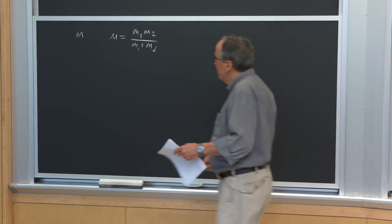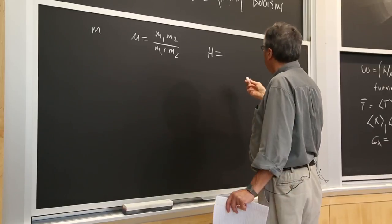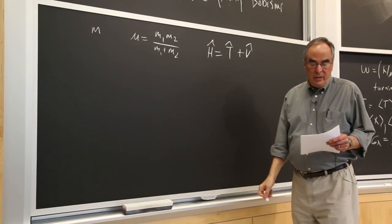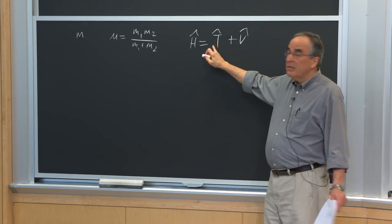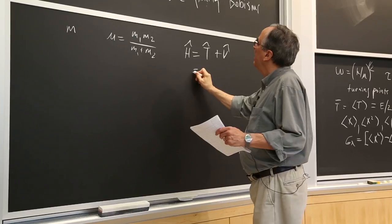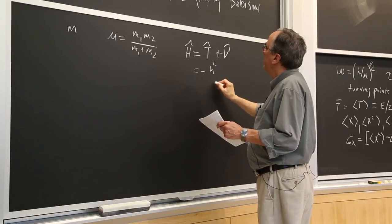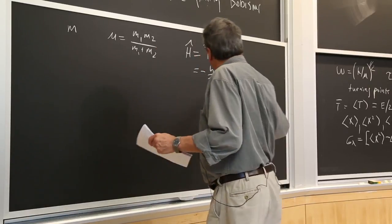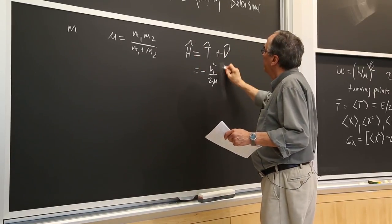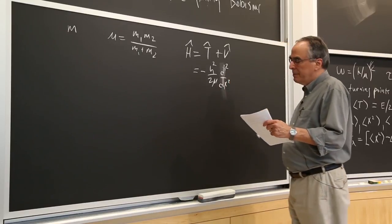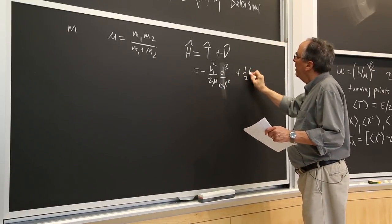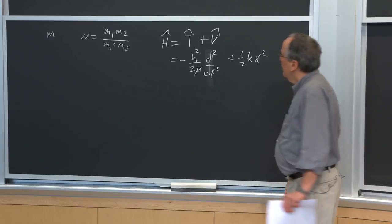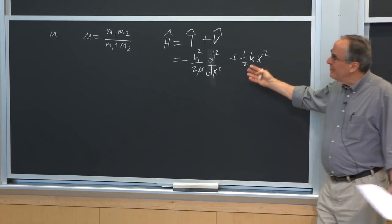The Hamiltonian is T plus V. In the usual form, T is p² over 2μ, so we get minus ℏ² over 2μ times the second derivative with respect to x, plus ½kx². That's the Hamiltonian. It looks kind of innocent, but it isn't.